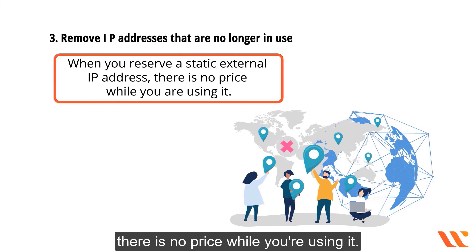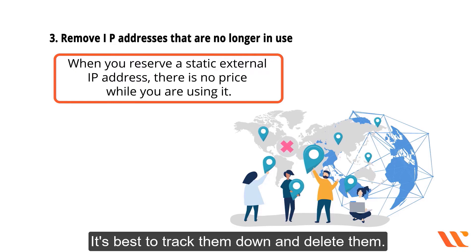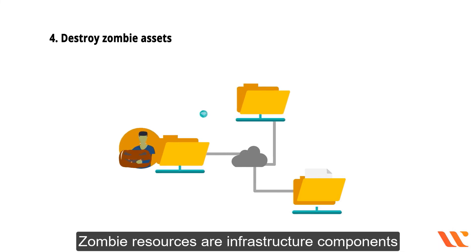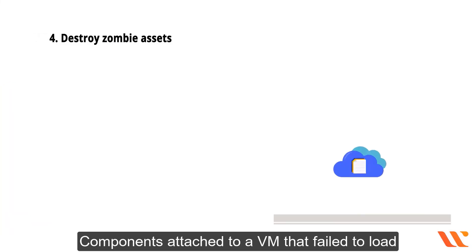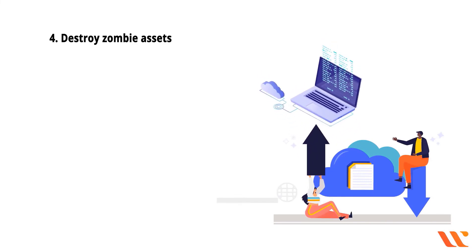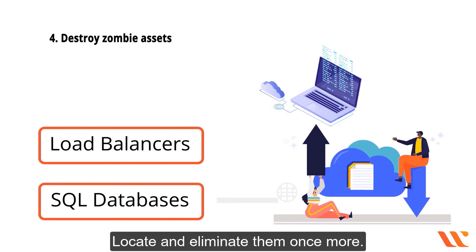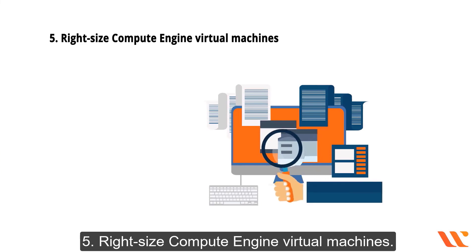Best practice three: remove IP addresses that are no longer in use. When you reserve a static external IP address, there is no charge while you are using it; however, Google charges after it is no longer in use, so track them down and delete them. Best practice four: destroy zombie assets — infrastructure components that are operating in the cloud but aren't being utilized, including idle load balancers and SQL databases.